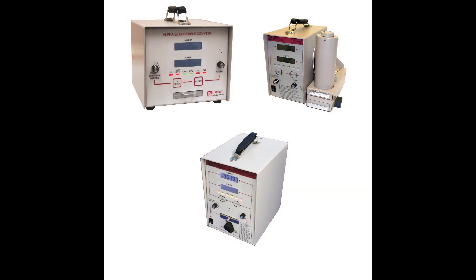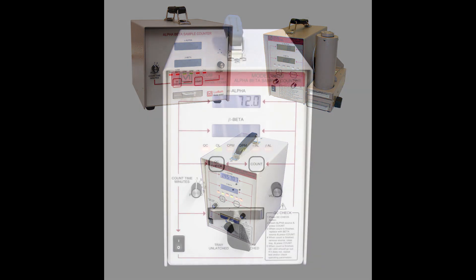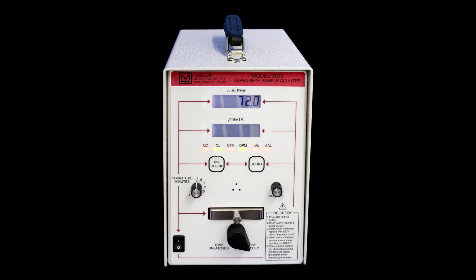The Model 3030 series of sample counters are dual channel counters designed for simultaneous alpha and beta sample measurements. In this video, we will use the term 3030 to represent all of the 3030 variants.